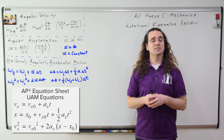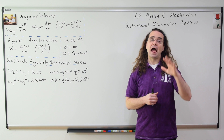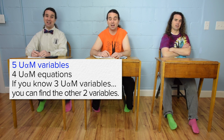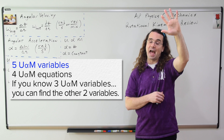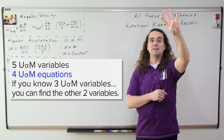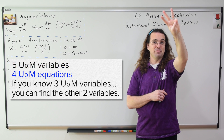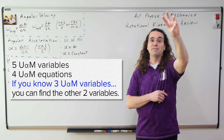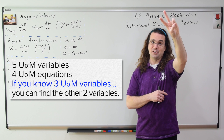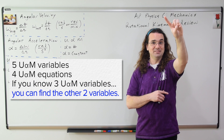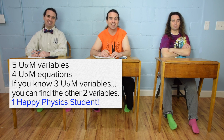Class, there are how many U fishy M variables? Five. And how many U fishy M equations? Four. If you know how many of the U fishy M variables? Three. You can find the other? Two. Which leaves you with one happy physics student!